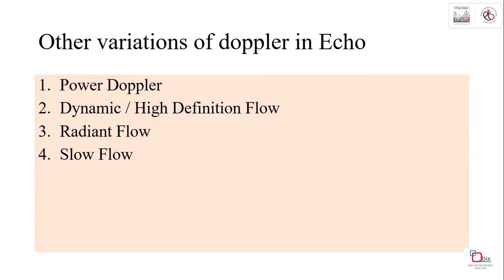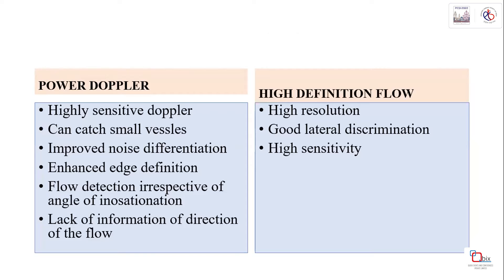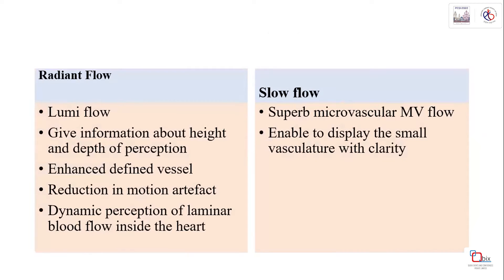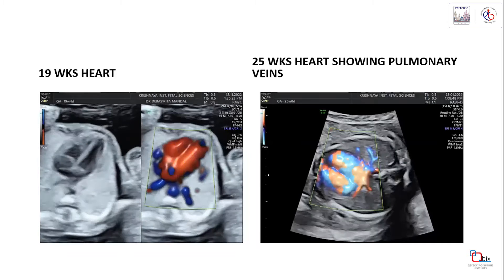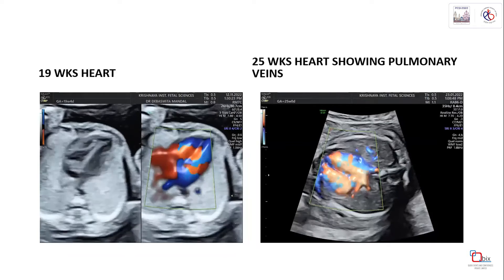Other Doppler variants used in fetal echo include power Doppler, high definition flow, and radiant flow. Power Doppler does not require angular correction and provides high definition edge detail, but lacks directional information. High definition flow offers good resolution and sensitivity. Radiant flow provides enhanced vessel definition, reduced motion artifact, and is excellent for slow flow - such as in first trimester cardiac assessment and pulmonary vein visualization.